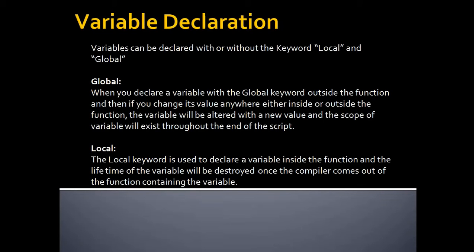Variable declaration: A variable can be declared with or without the keywords local and global. When you declare a variable with the global keyword outside a function and then change its value anywhere — either inside or outside the function — the variable will be altered with a new value, and the scope of the variable will exist throughout the end of the script.